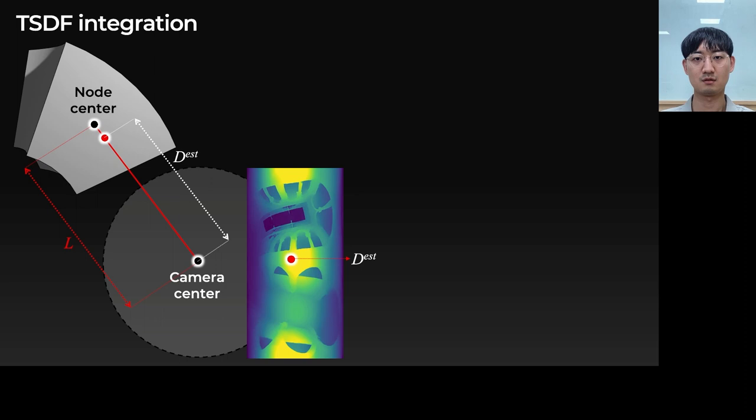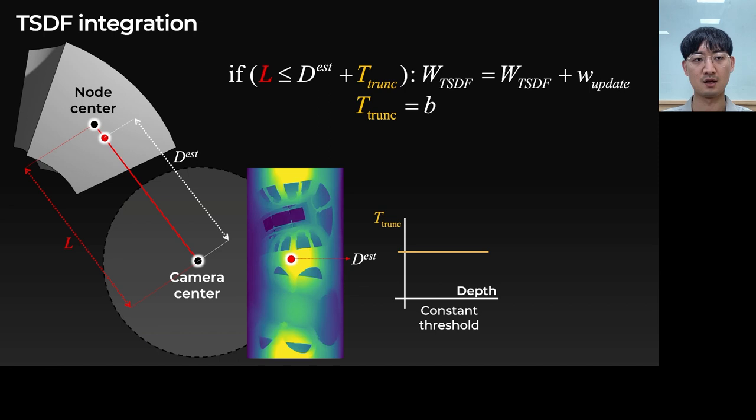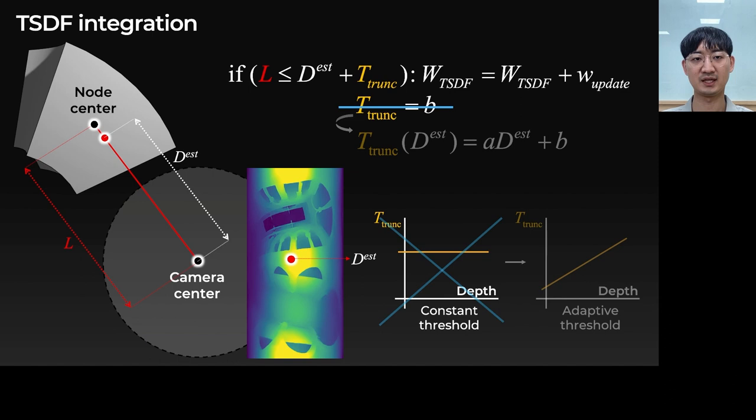Moreover, we slightly changed the TSDF truncation policy. We observed that a constant truncation threshold could not handle the increasing depth error in far regions which leads to large holes in the output mesh. To solve this problem, we adaptively increase the truncation threshold as a linear function of estimated depth.